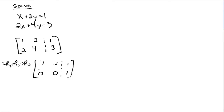All right, you're done with the first column, so go to the second column. Where do you get your one? You need your one right here, but it's a zero, and there's no way to get a one here without messing up your first column. What does this augmented matrix say now? The last row says zero x plus zero y equals one. Well, that's a false statement.